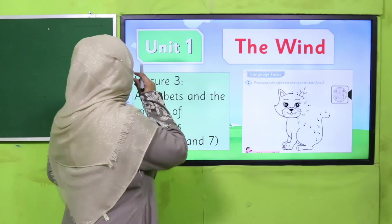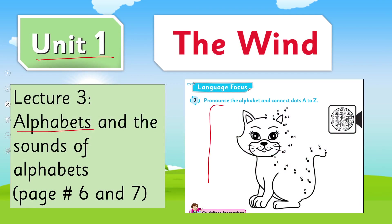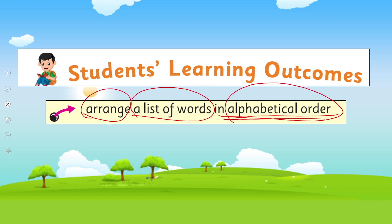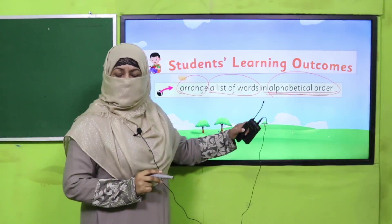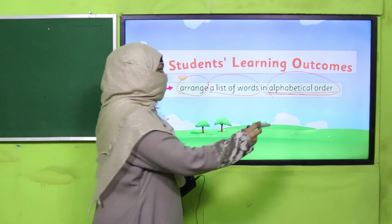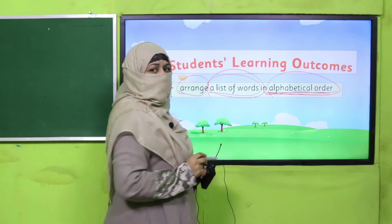In Unit 1 I taught you this, and you practiced it — joining all the letters A, B, C, D, E. So you practiced it in Unit 1 as well. Now we are going to learn further: to arrange a list of words in alphabetical order. So what is alphabetical order? The way ABC is arranged — A comes first, then B, then C, then D — this is called alphabetical order. We are going to arrange words in this order. This is our today's SLO.